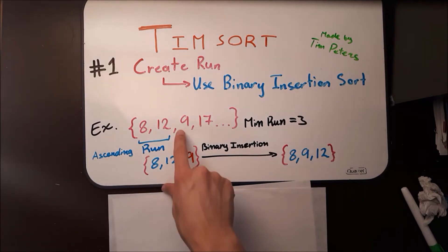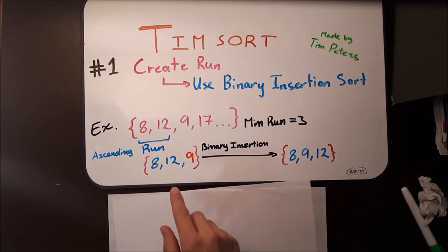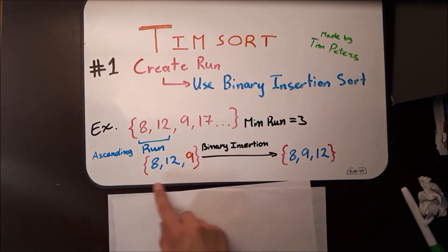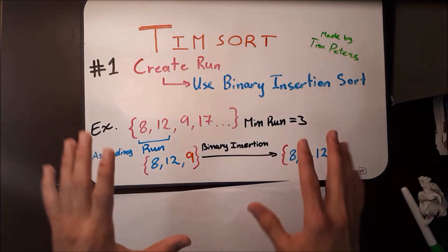The run is 8 and 12, and the next element is 9. And because the minrun is 3, there has to be 3 elements in this subarray, in this run. So it adds 9, and then, no matter what the case is,